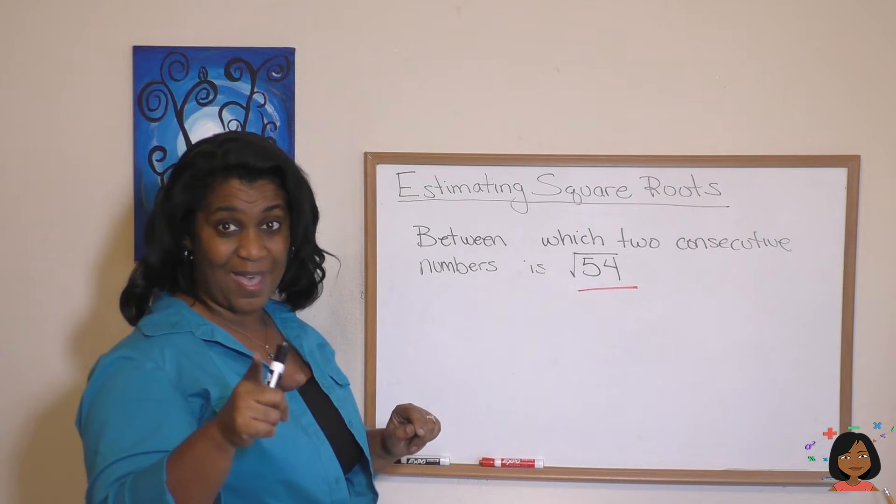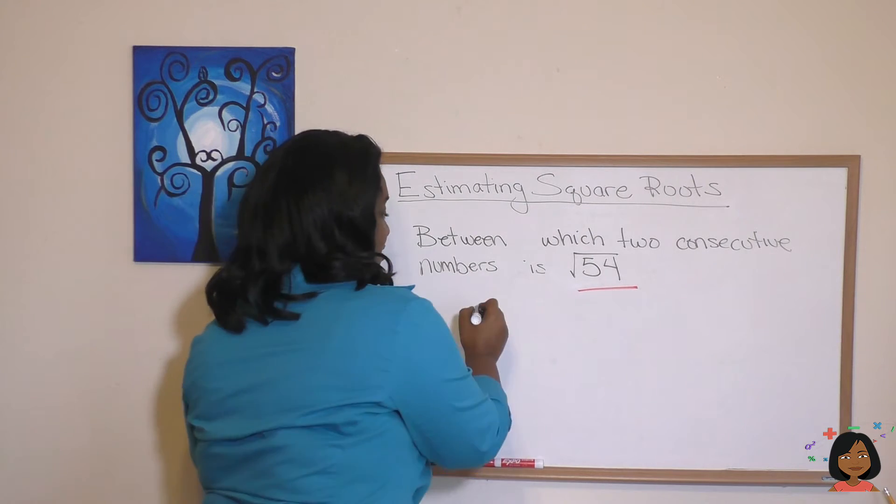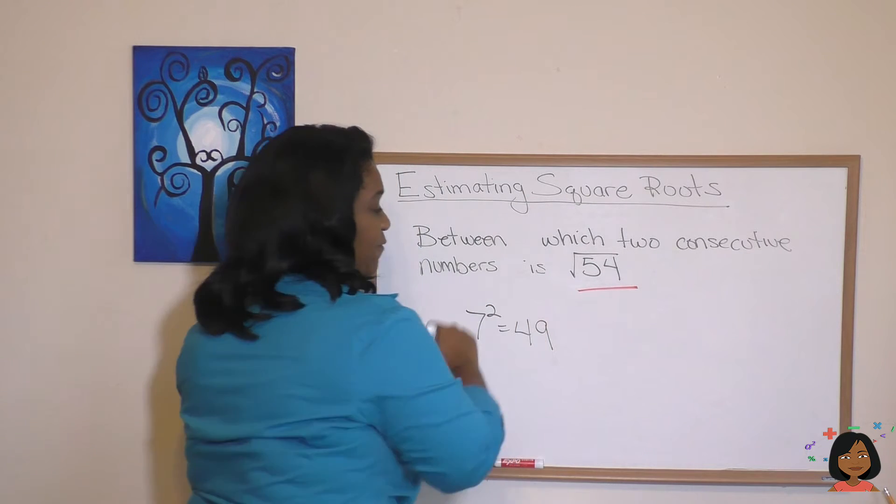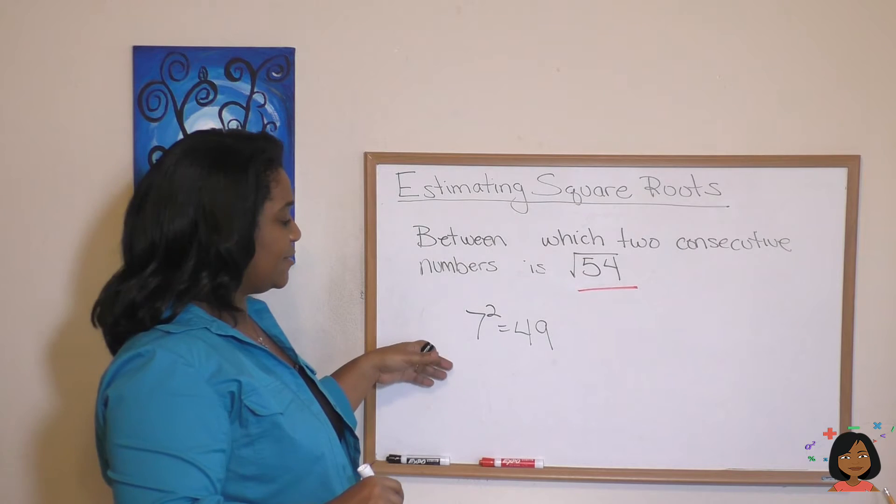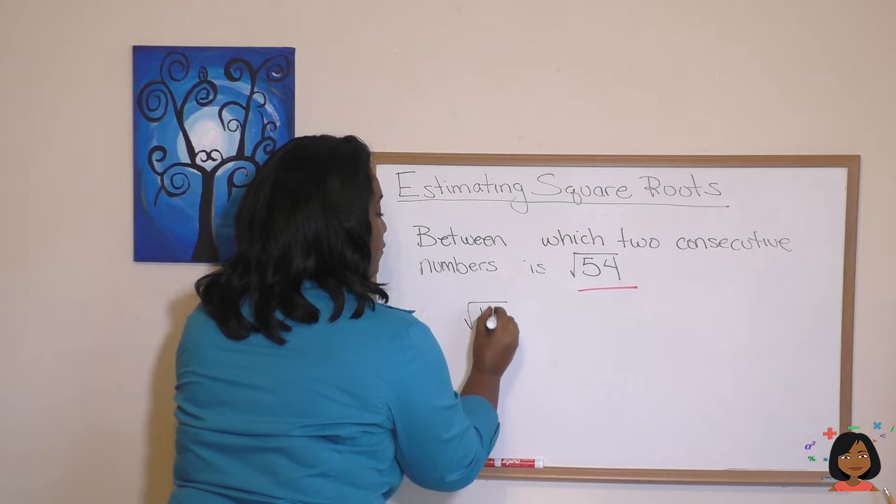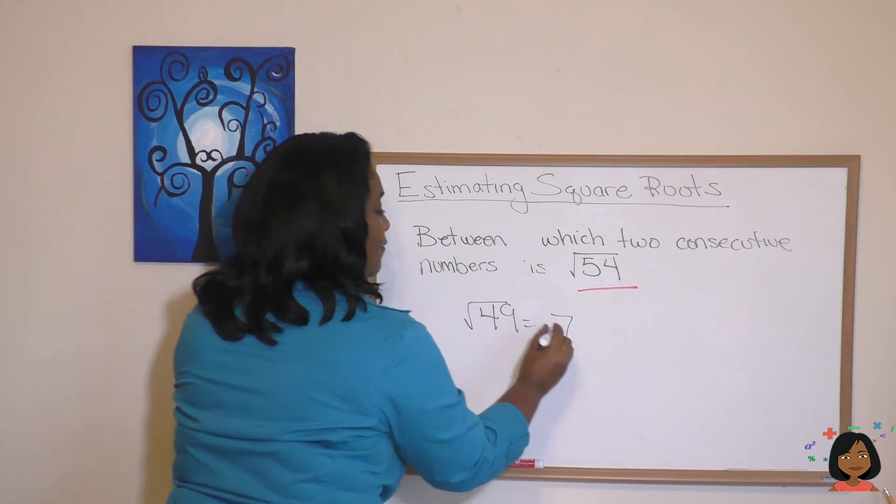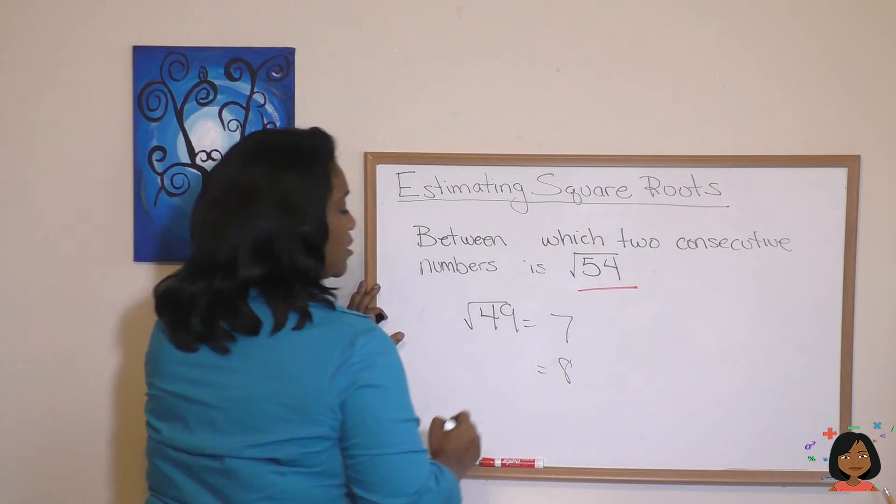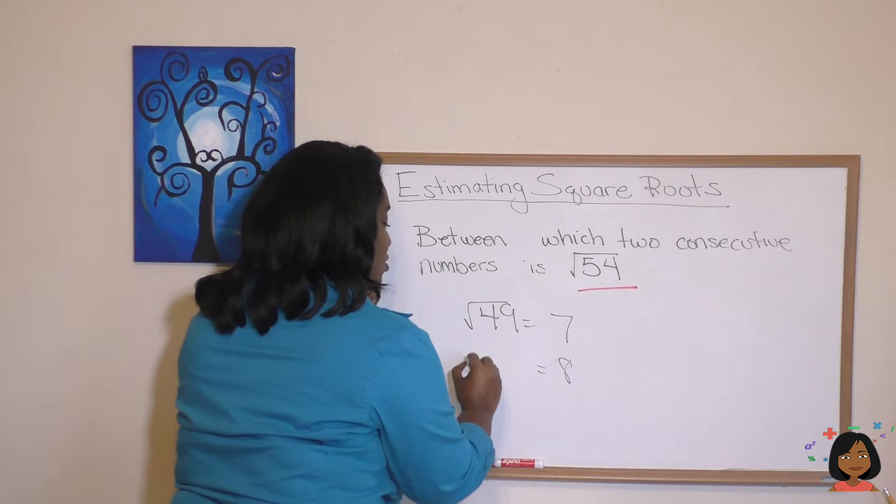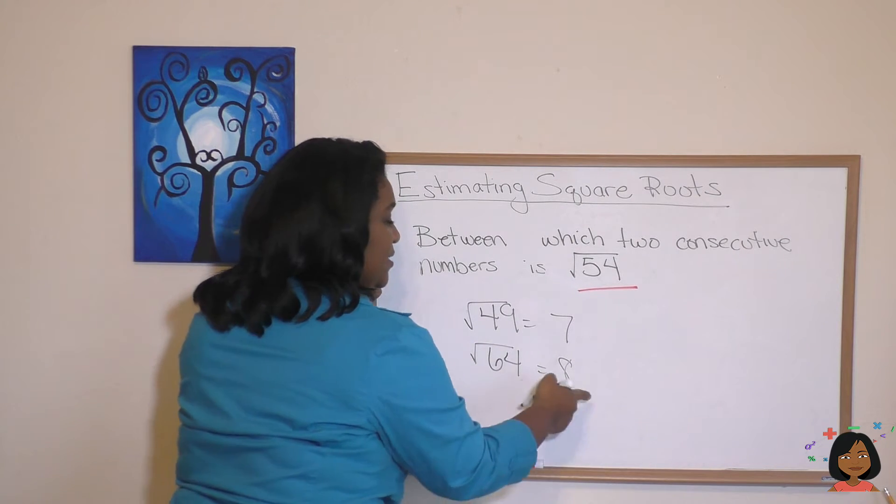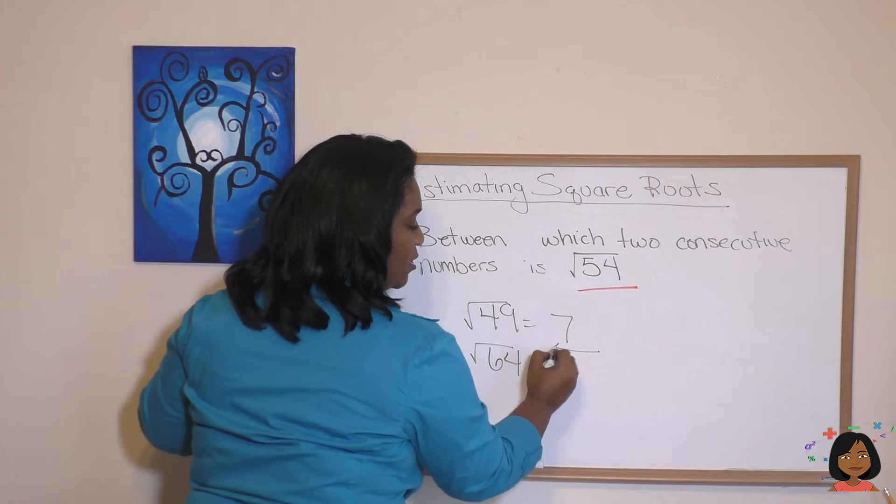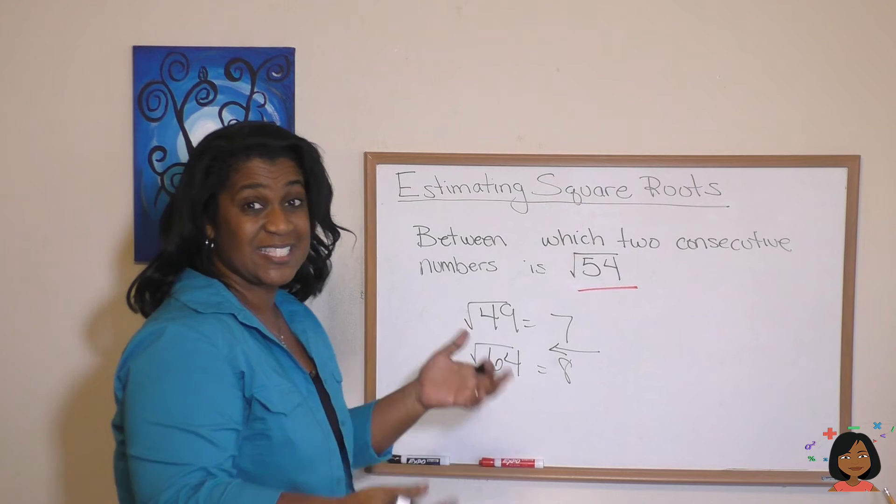It's pretty close to 54. So let's write down 7. Square root of 49, 7. And I'm going to write it like this actually. I'm going to write exactly how I just said. So the square root of 49 equals 7. And what's 8 times 8? Well, 8 squared is 64. So the square root of 64 is 8. So we can see that 54 lies somewhere in here. So our answer is between 7 and 8.